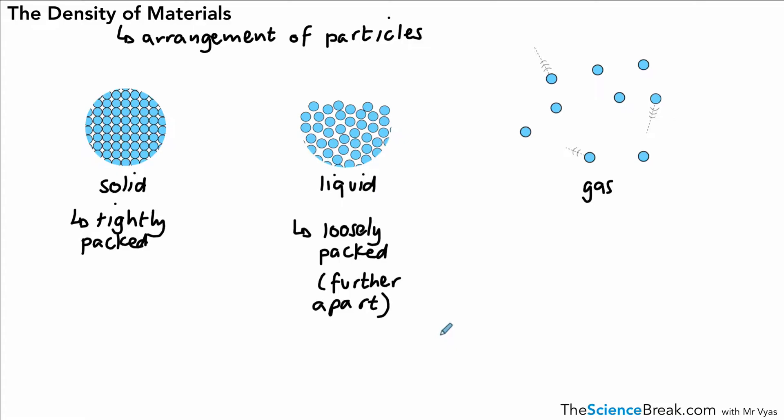Particles in a liquid are further apart than they would be in a solid. That means that as a result of that, the liquid is going to be less dense because there are less particles in the same volume. If you had the same volume of a liquid and of a solid, in the liquid there would be less particles in the same volume.